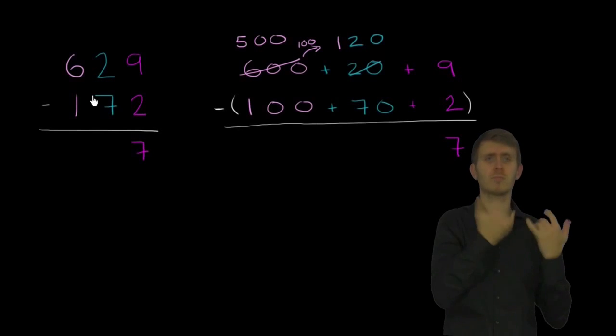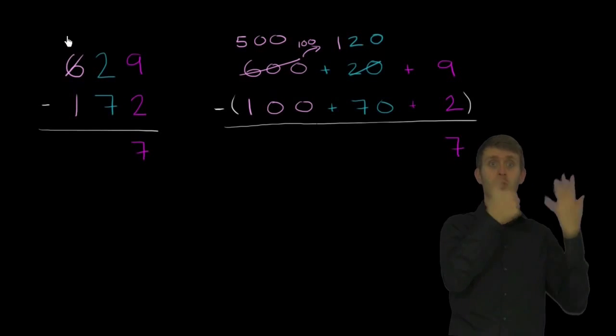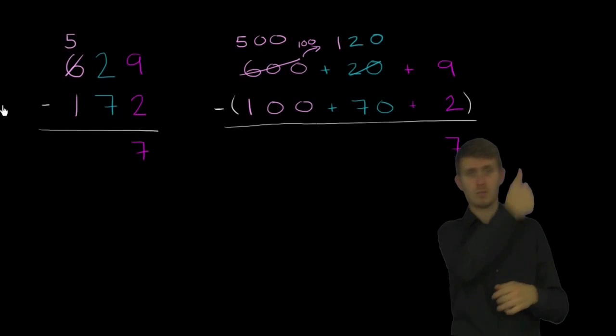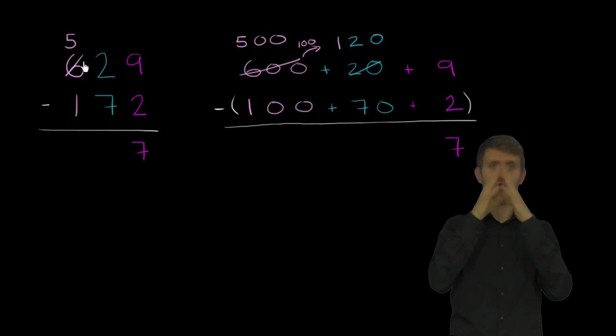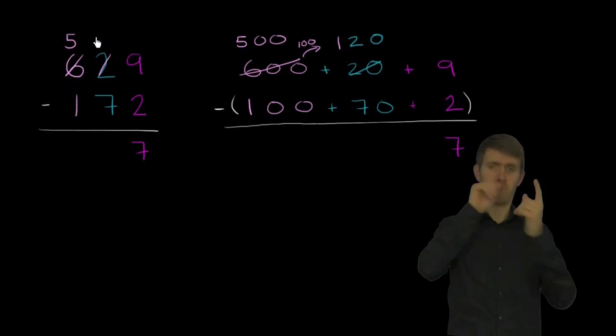So how would we do that right over here? Well, if we take 100 from the hundreds place, this 600 becomes a 5, 500. And we give that 100 to the tens place, it's going to be 10 tens. So this will now become a 12.